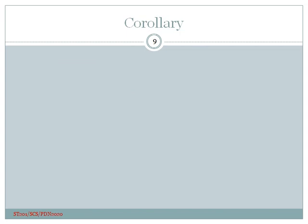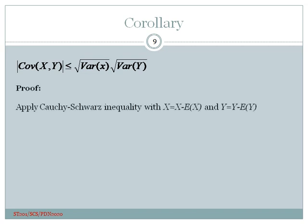Here is another application. The absolute value of the covariance of x and y is always less than or equal to the product of the standard deviations of x and y. To prove this, apply the Cauchy-Schwarz inequality by replacing x with (x − E[x]) and y with (y − E[y]). This is left as an exercise.